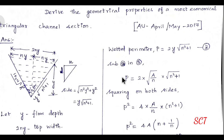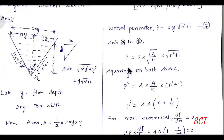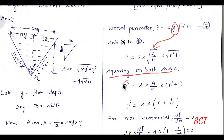Next, we calculate the perimeter. The perimeter consists of two sloped sides, each of length y√(n² + 1), so P = 2y√(n² + 1). We then substitute y = √(A/n) into this expression. Squaring the perimeter: P² = 4(A/n)(n² + 1). Simplifying inside, we get P² = 4A(n + 1/n).